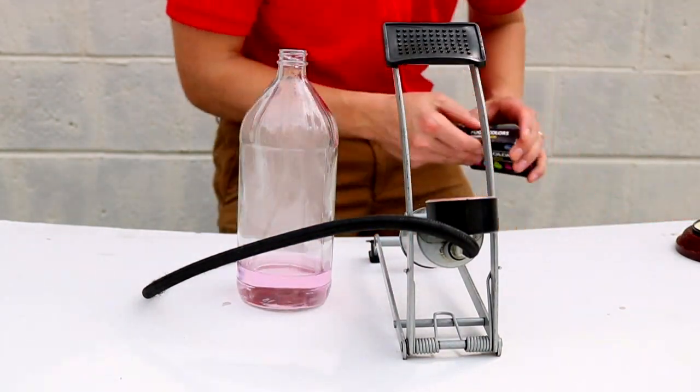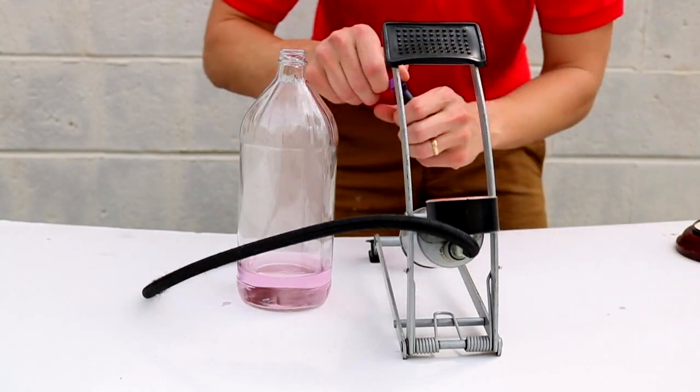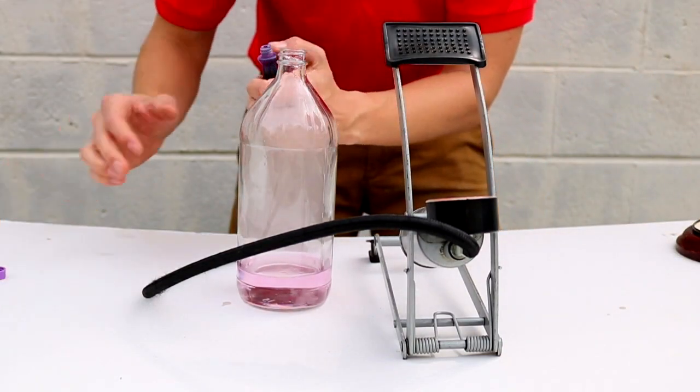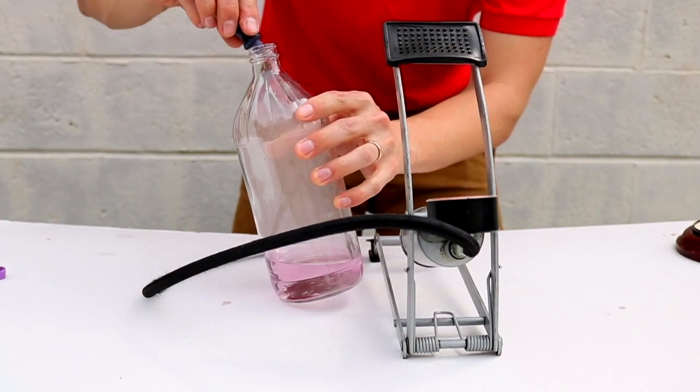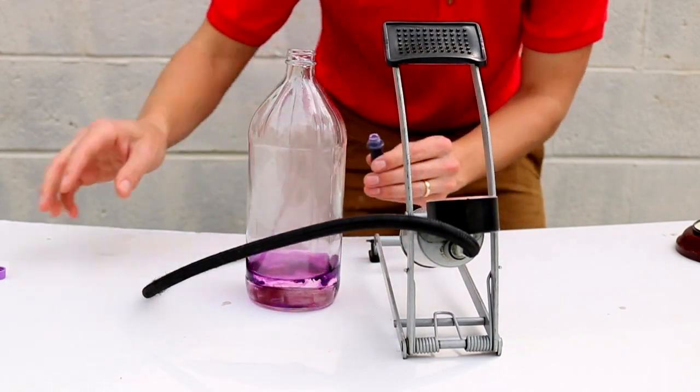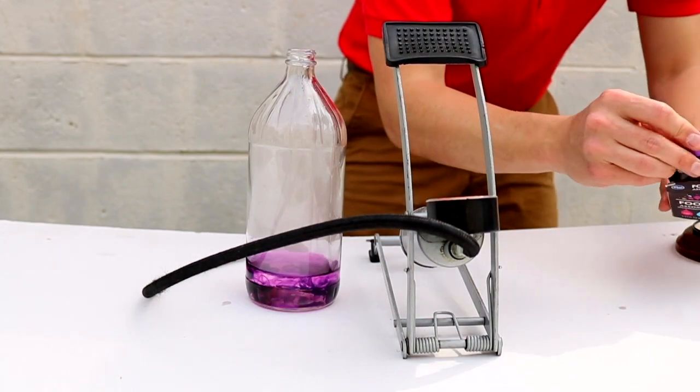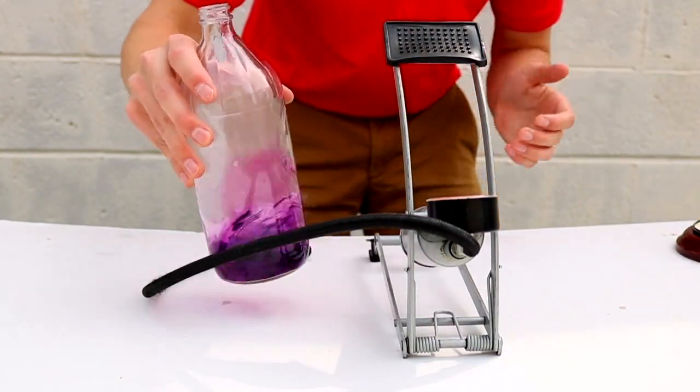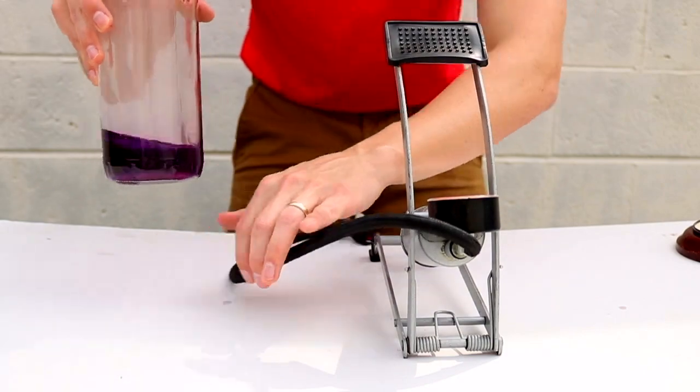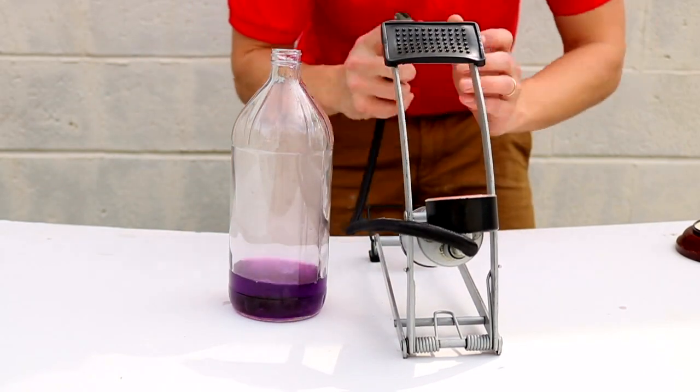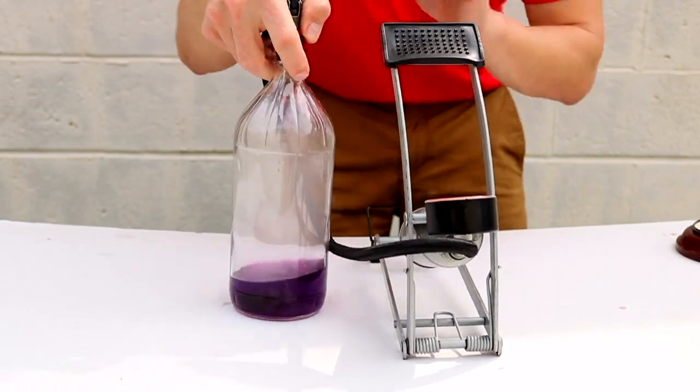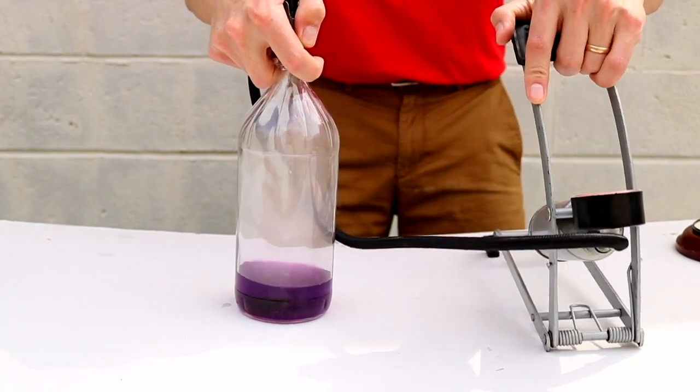You might have already noticed that there's a little bit of food coloring also on the inside of the bottle to show you the water. Let's put a little bit more in and see what happens. Now, by putting that food coloring in, do you think that could possibly make the cloud turn purple?